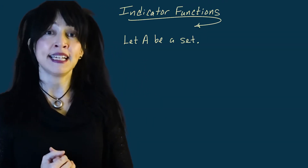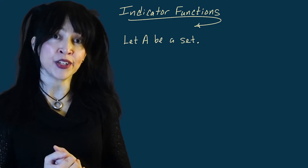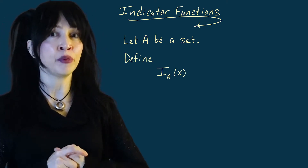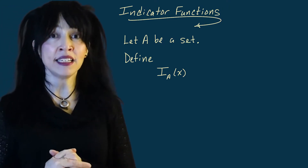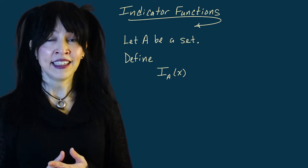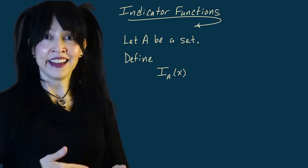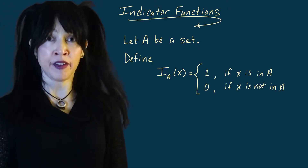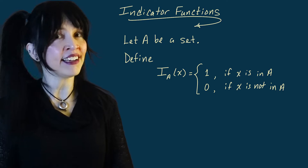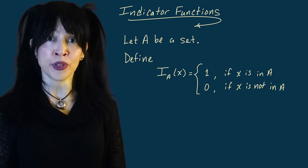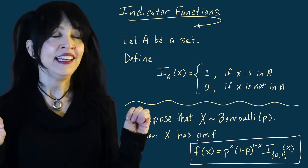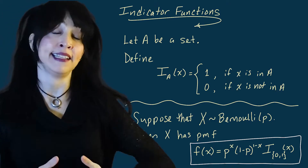I'm going to let A be any subset of the real numbers and define a function — I'll call it capital I for indicator, denoted I sub A — where A is this fixed set. It's going to be a function of x: it gives the value one whenever x is in that set A, and the value zero whenever x is not in A. Going back to the Bernoulli distribution, we can write the probability mass function more succinctly on one line.